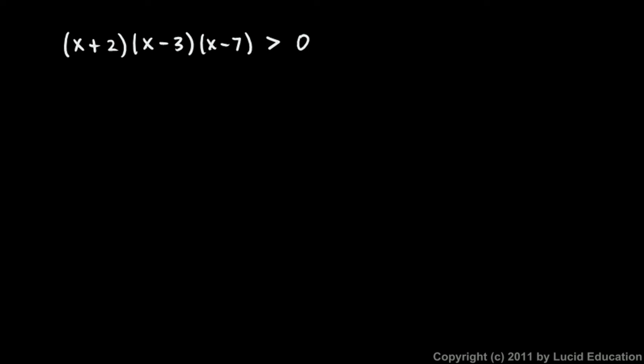First we have a polynomial inequality — you can see it's greater than zero, not an equal sign. This is a polynomial, specifically a cubic. You can see three X's multiplied together would give us an X cubed. It's in factored form. I'm going to show you the standard textbook approach to solving this, which is a bit tedious, and then a more efficient graphical way to think about it.